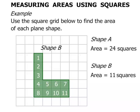So shape B has an area equal to 11 squares. That shape covers 11 squares.